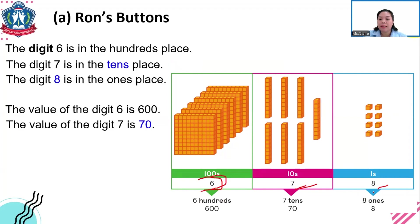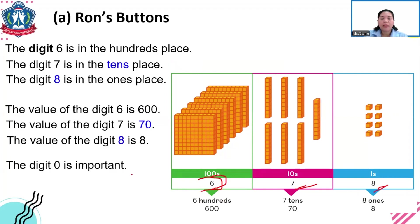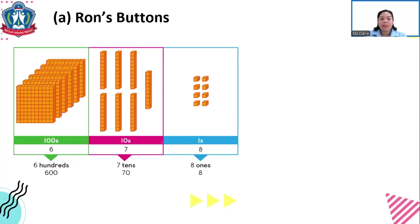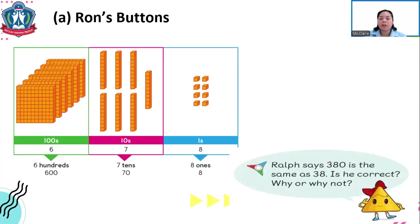The value of digit 6 is 600, the value of digit 7 is 70, and the value of digit 8 is 8. The digit zero is important — for example, 308 is not the same as 38. Ron says 380 is the same as 38. Is he correct? Why or why not? Please share your answers during our class.